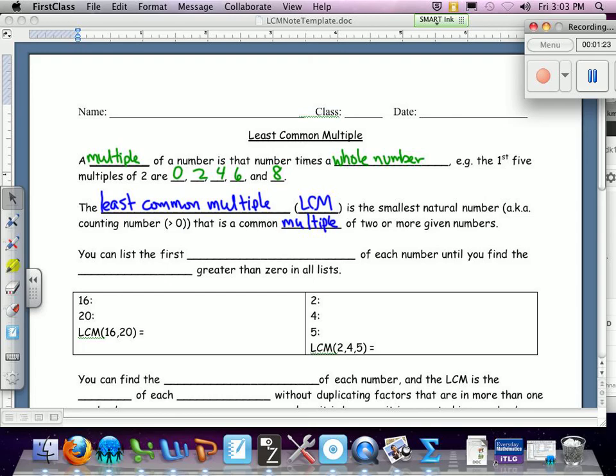The listing method is a possibility, but the problem is, the strategy is you can list the first several multiples of each number. Several is very vague. You don't know, a lot of times in the journal it'll say, list the first six of this number, list the first six of that number, and it's there. But you don't know, it might not be within the first six. It says until you find the same number greater than 0 in all lists. If you make one mistake while you're making your list, the whole rest of your list falls apart. Every number after that's going to be wrong because you're adding the same number over and over again, but you're adding it to the wrong part in the middle.